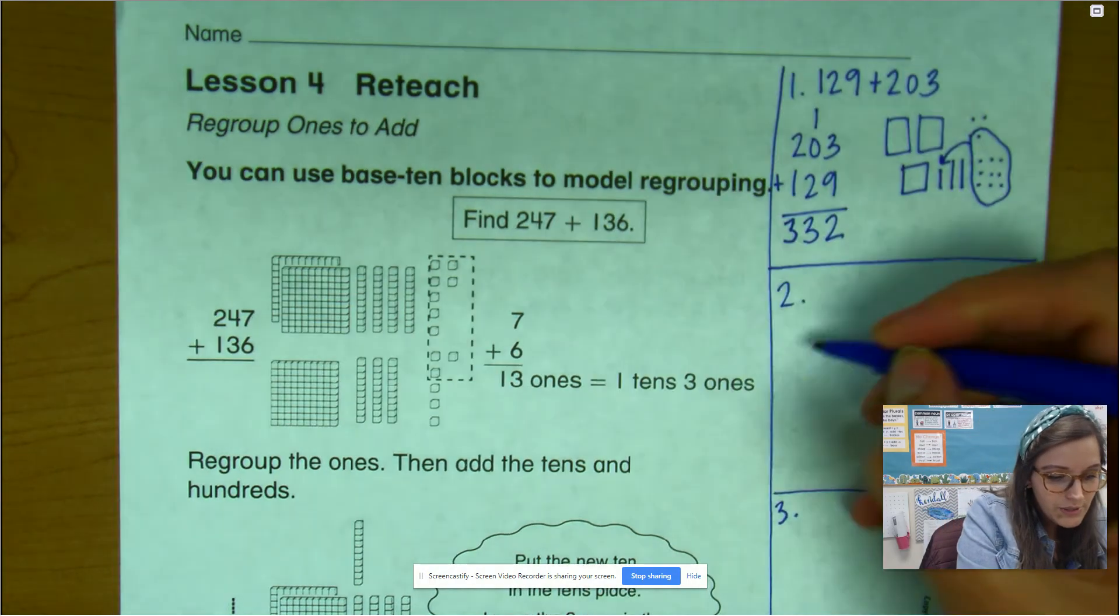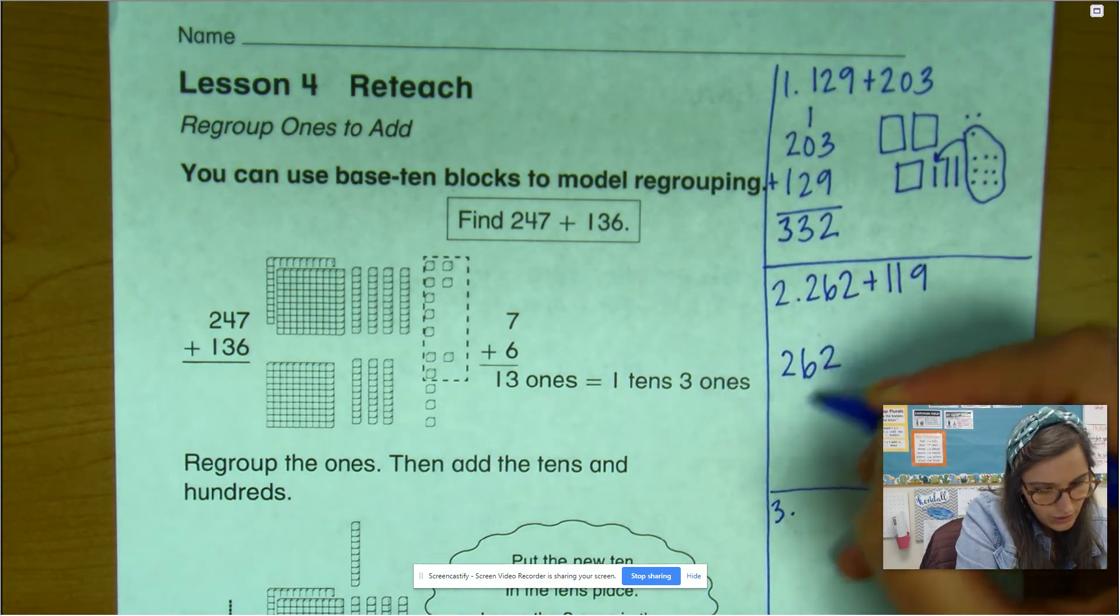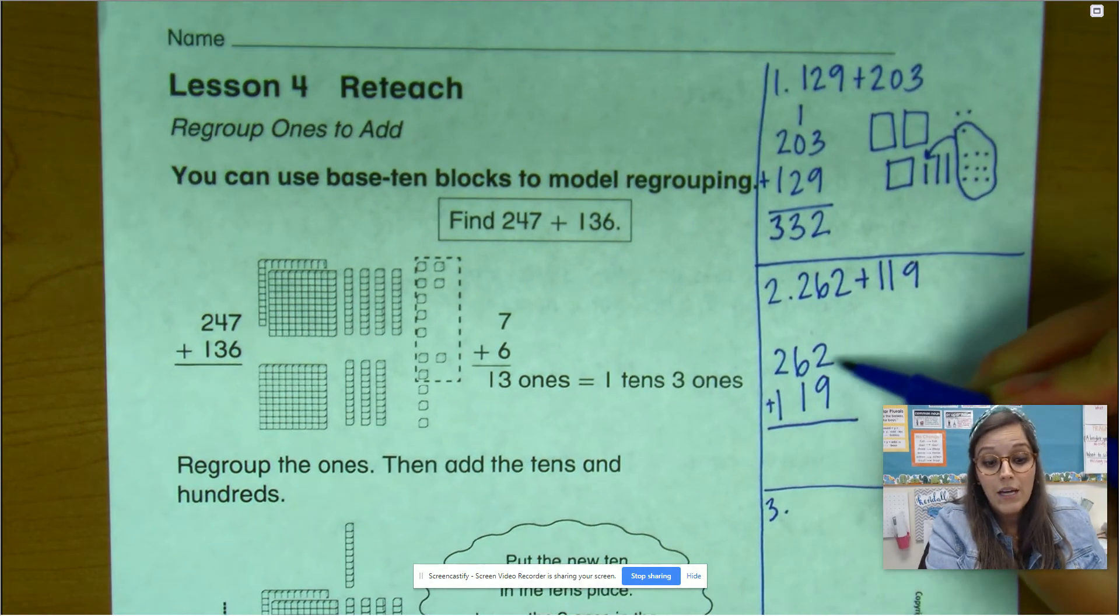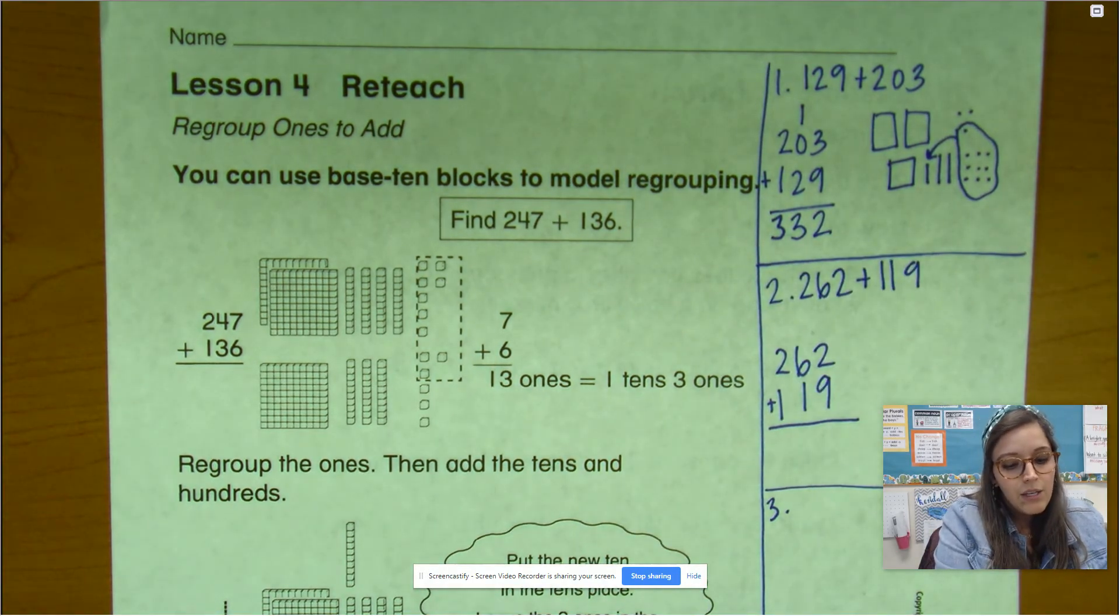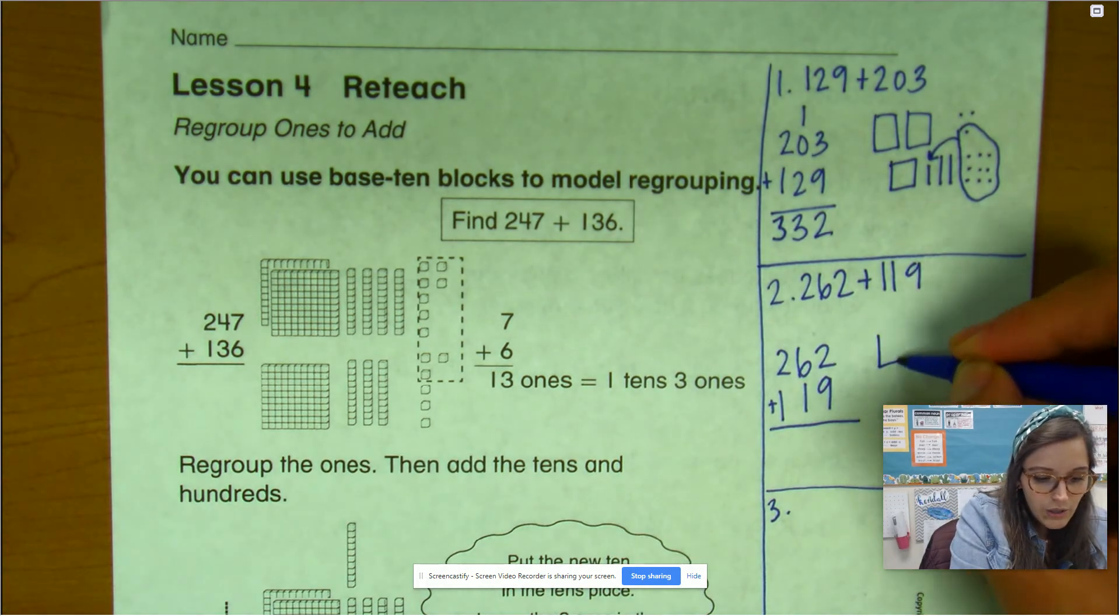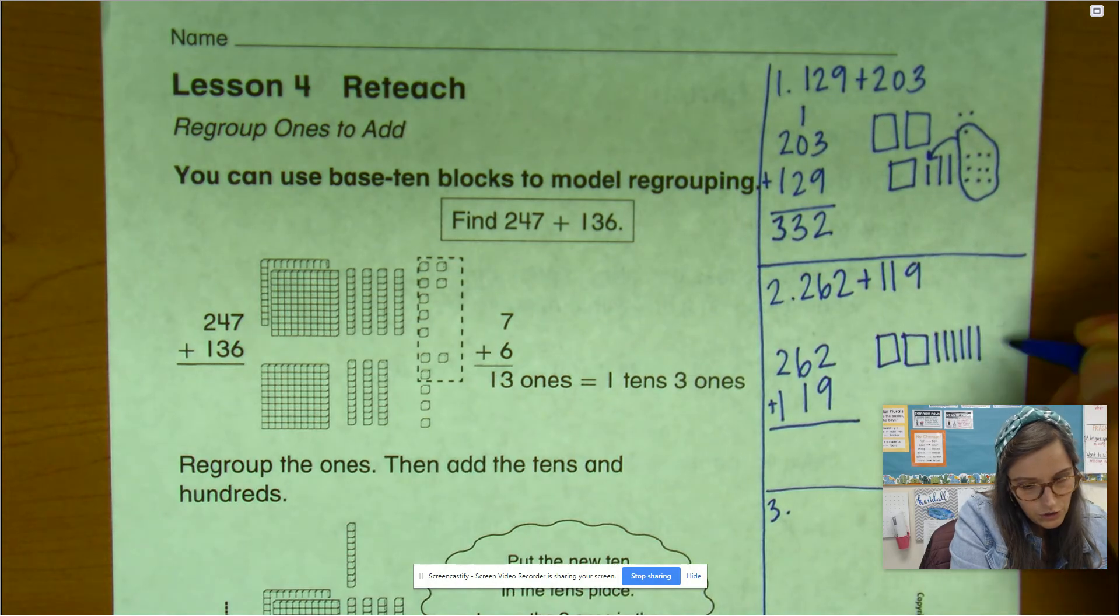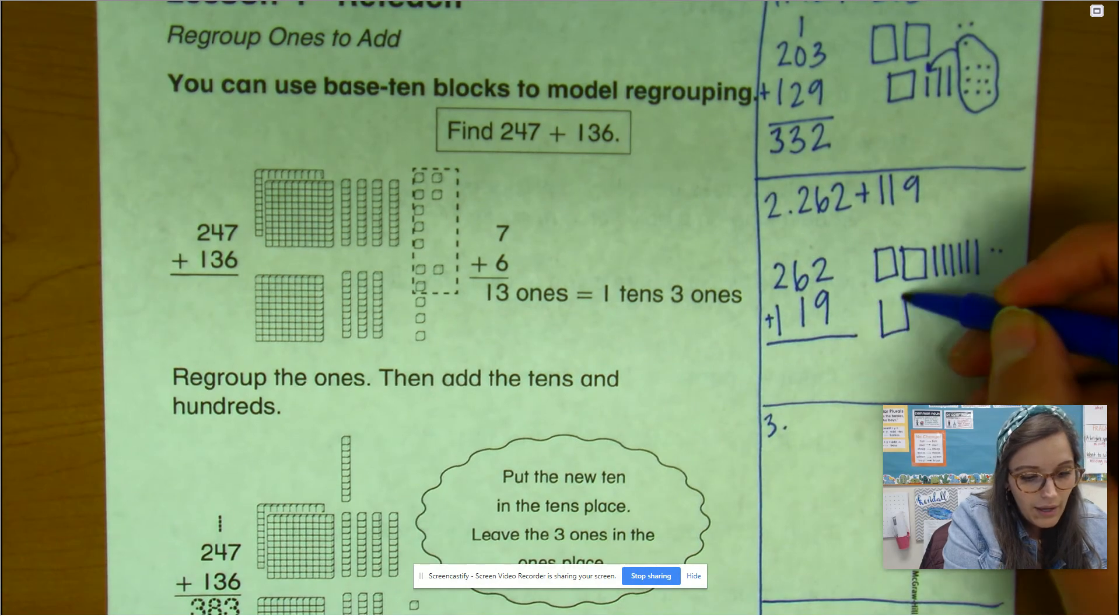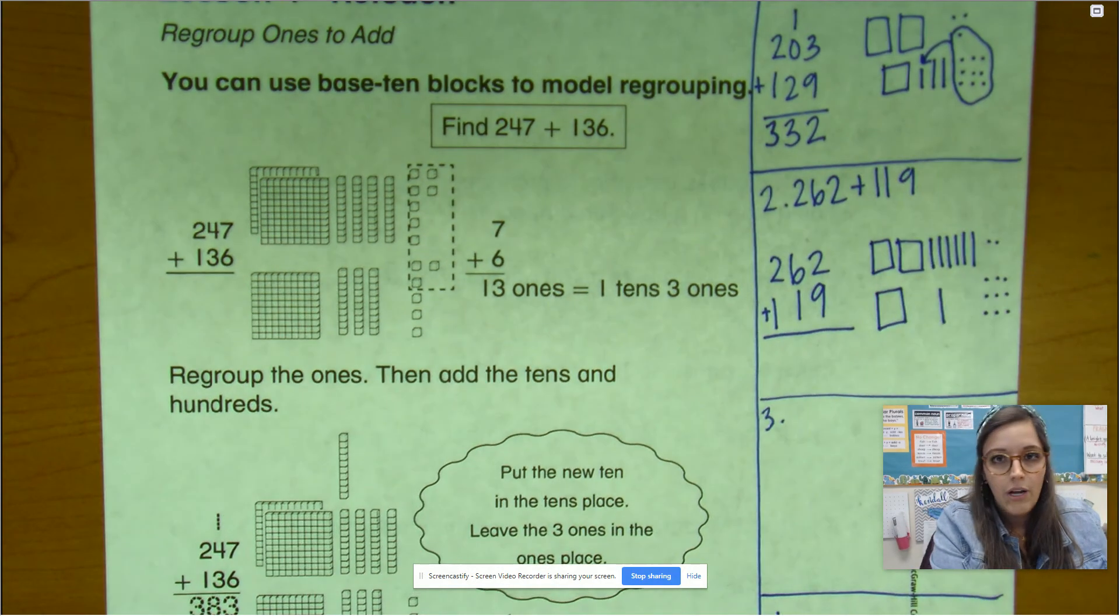Let's do 262 plus 119. And let's do it right here. 262, 119. My plus sign. Make sure that you're adding or that when you're writing it down, you're doing ones on top of ones, tens on top of tens, hundreds on top of hundreds. So let's build it. 260. So six tens. One, two, three, four, five, six. And two ones. 262. 119 would be 100, one 10, and nine ones. Notice how I'm putting ones under ones, tens under tens, hundreds under hundreds.